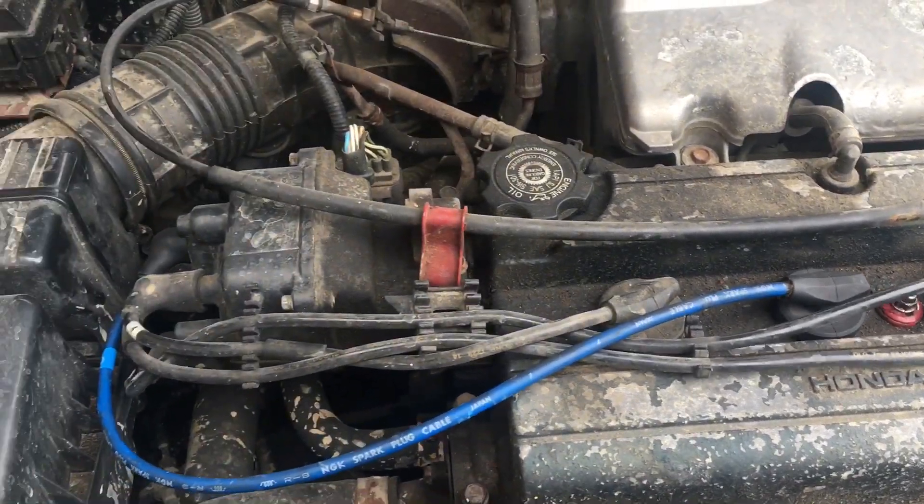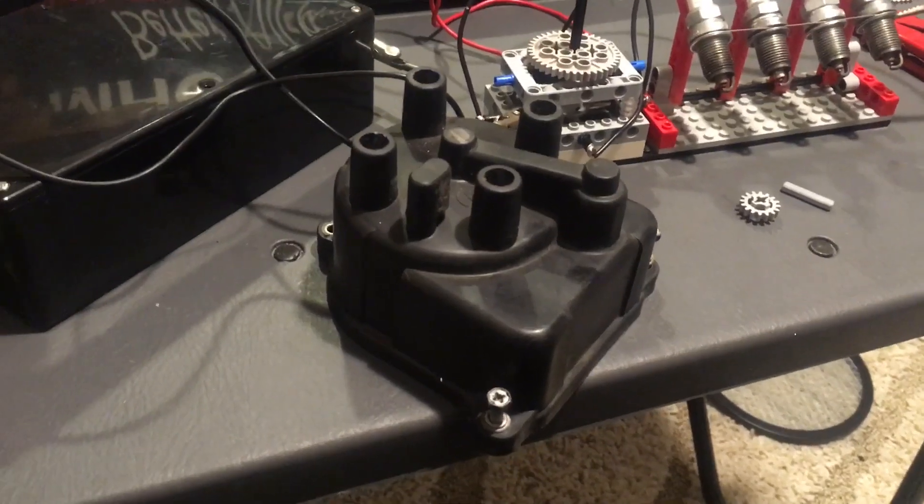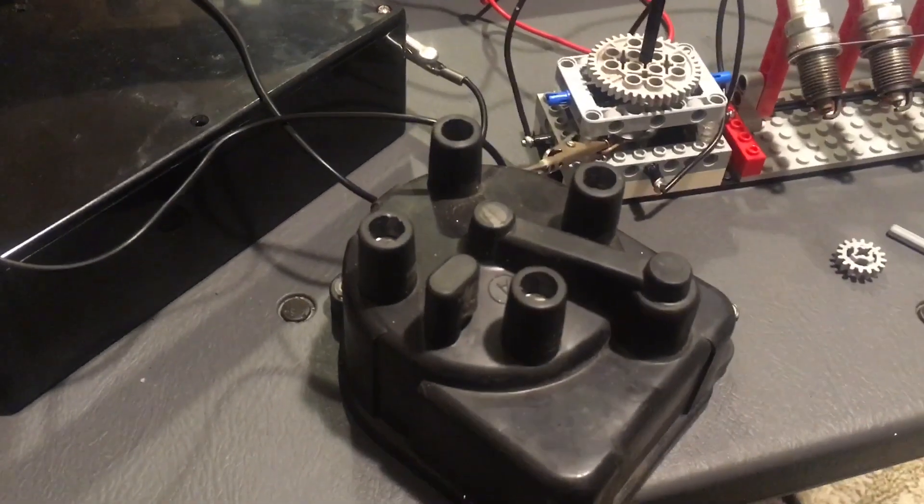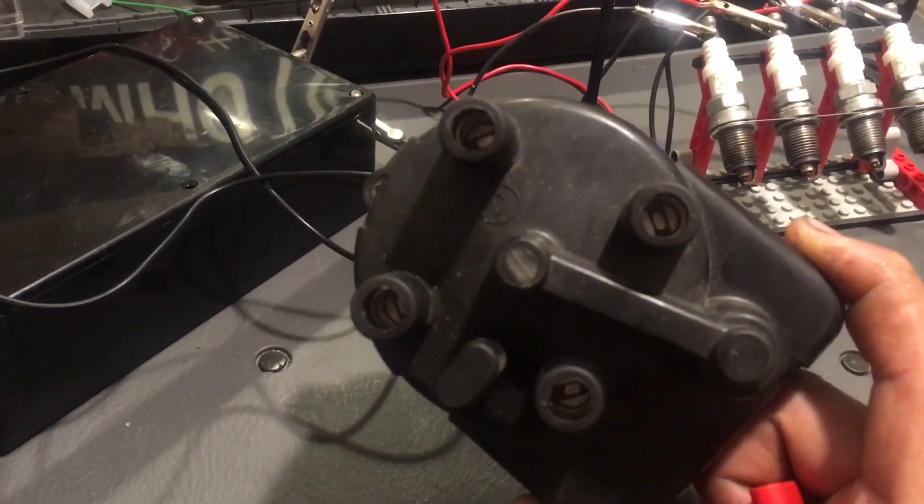So it consists of two main parts called the cap and the rotor. Now what I have here is the cap, and you can see that there's four holes for the spark plug wires to plug into, and on the other side of these holes are contact points.